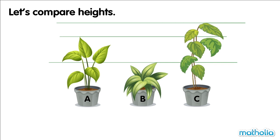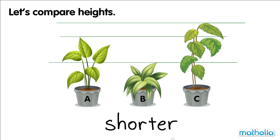Plant B is shorter than plant A. Shorter. Plant C is taller than plant A and plant B.